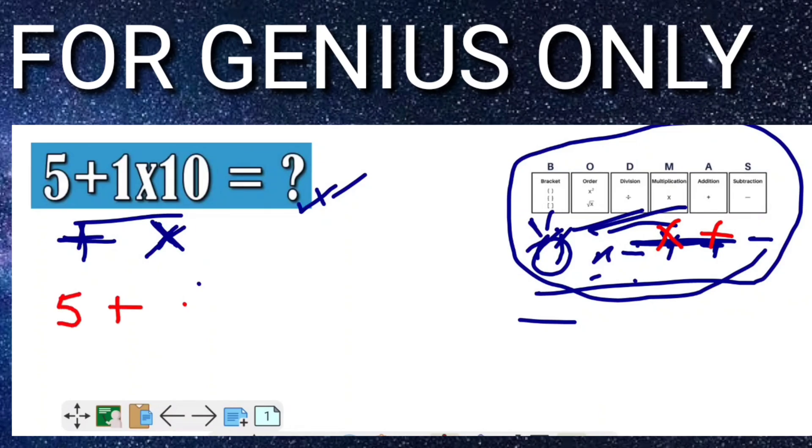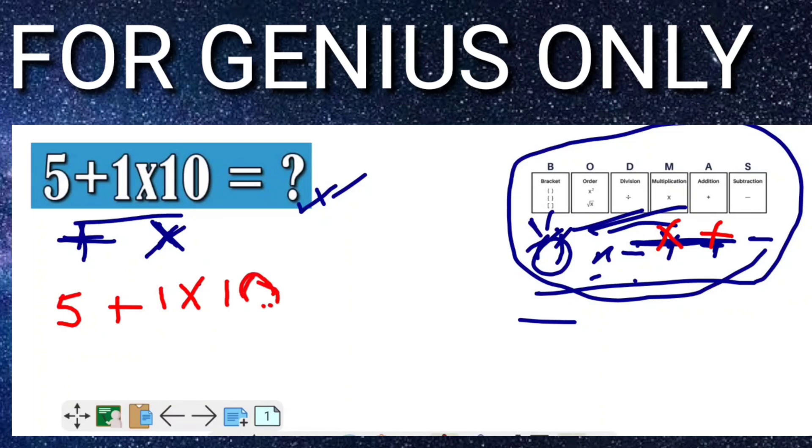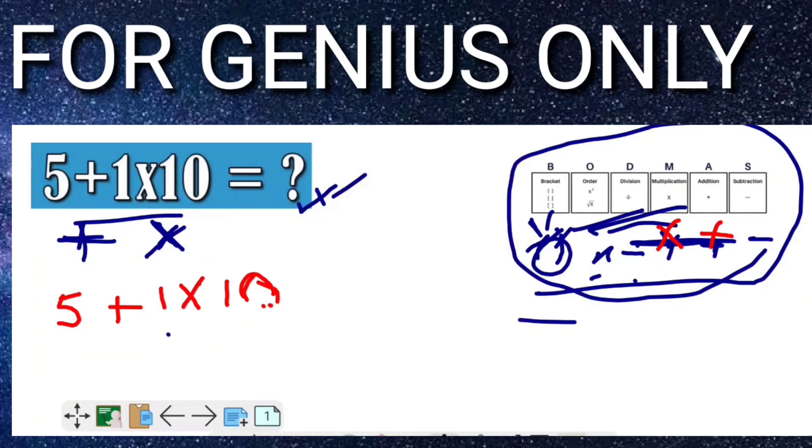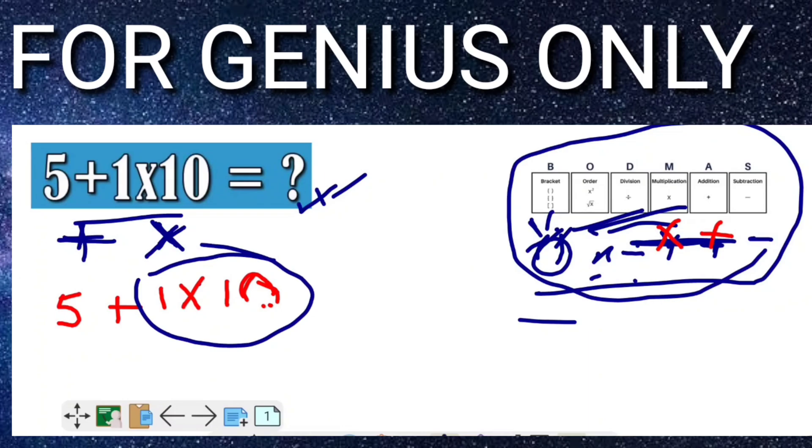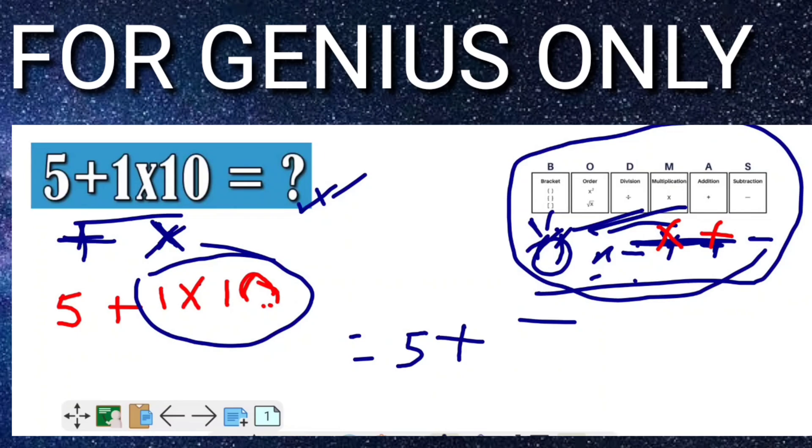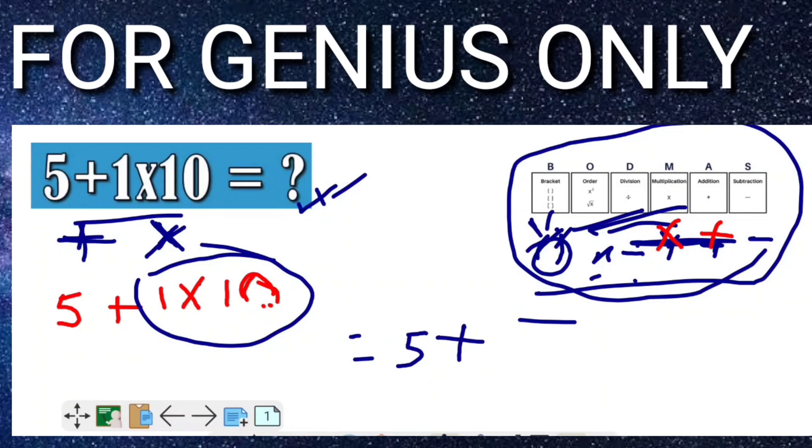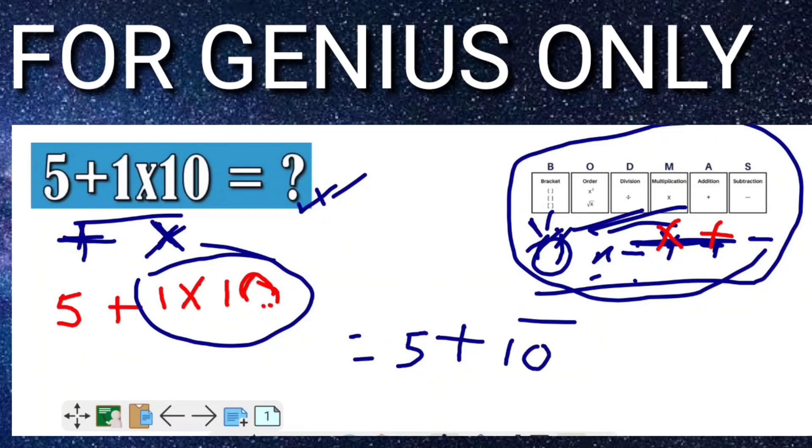So what we will do first? 5 addition 1 multiply 10, 1 multiply 10. So 5, or when I will multiply anything with 1, that will remain, means it will come 10.